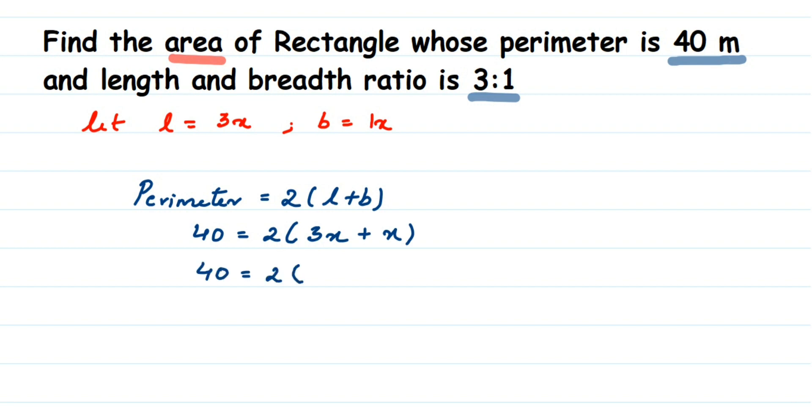So 40 = 2(4x) = 8x. To find x, we transpose 8 to the other side. Since it's multiplied, it will be divided. So 40 ÷ 8 = x. Canceling: 8 × 5 = 40, therefore x = 5.